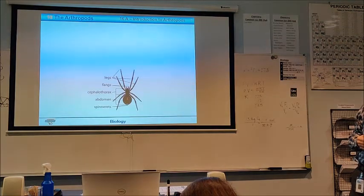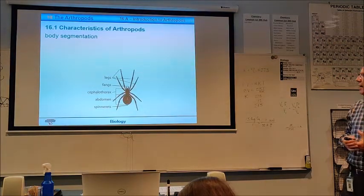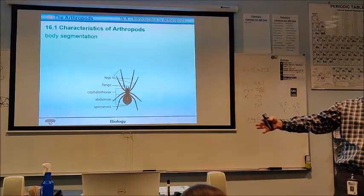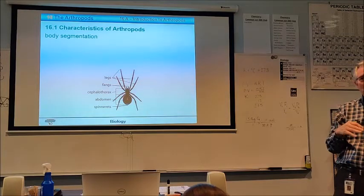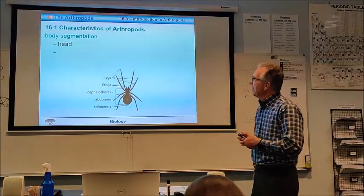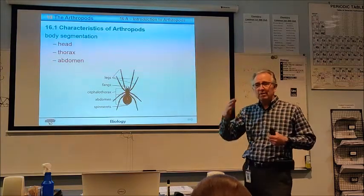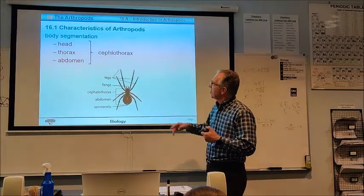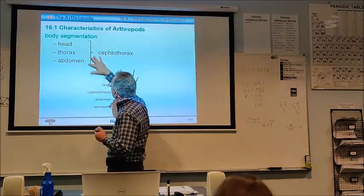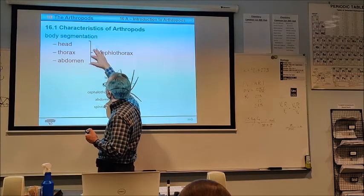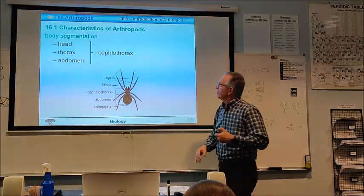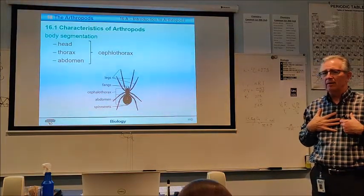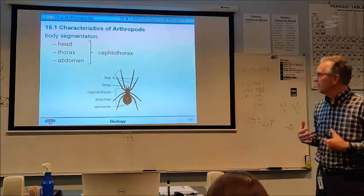All arthropods have segmentation. Remember, that was one of the things on our chart in the last chapter. Do they have segmentation or not? And these clearly do. They have a head, a thorax, and an abdomen. Those are the three main parts. The head and the thorax is called a cephalothorax. This goes down too far. It should go only to here. So cephalo means head, and thorax is like chest. And then they have an abdomen.